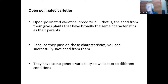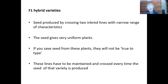F1 hybrid is a term from genetics meaning the first generation after a cross, but in vegetable variety terms, F1 hybrid seed is produced by crossing two inbred lines. You choose two parent lines and self-pollinate them until you get two very pure, distinct, and uniform plant lines with a very narrow range of characteristics — the sorts the supermarket wants. Crossing these two lines produces seed that gives very uniform plants because of the nature of their parentage.